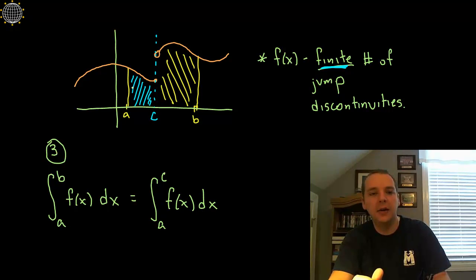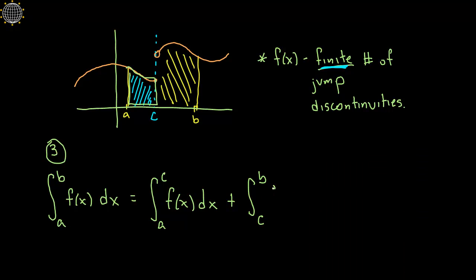So that would give you the area just in region one right here. And then we'll add to that the integral from C to B of f(x)dx. And it turns out the sum of these two independent areas turns out to be the total integral from A all the way to B. So that's how you handle just weird little breaks and functions and whatnot.